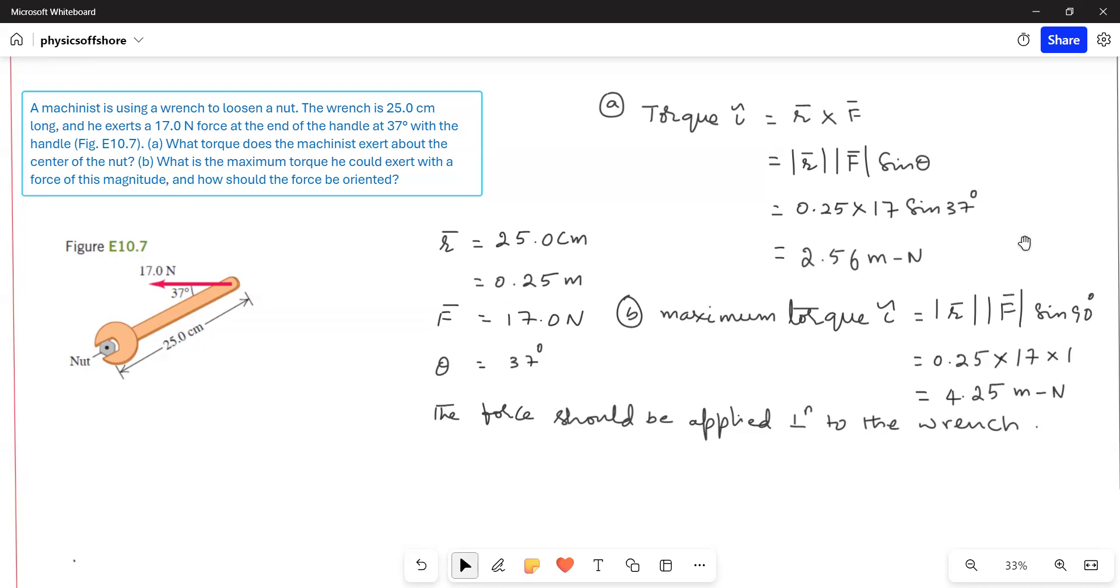So, once inputting the 90 degrees instead of theta, we get the answer as 4.25 meter Newtons. And he is asking how should the force be oriented? It should be applied perpendicular to the wrench. That's the answer for this question. Thank you. Bye-bye.